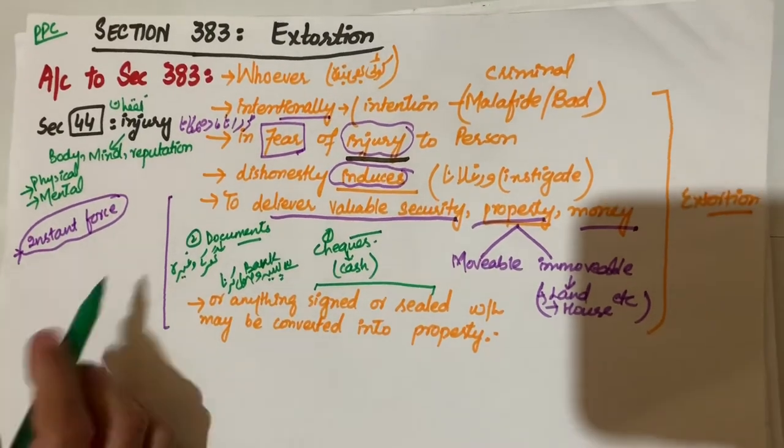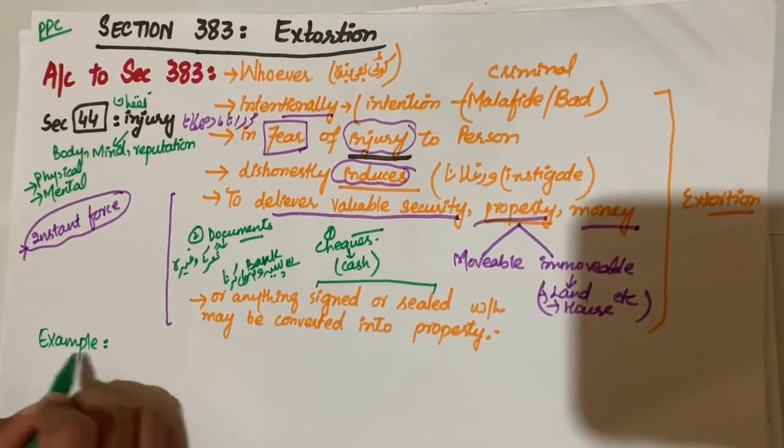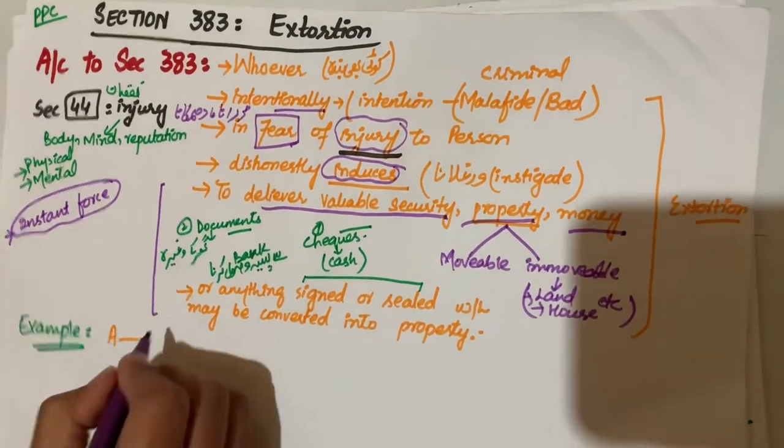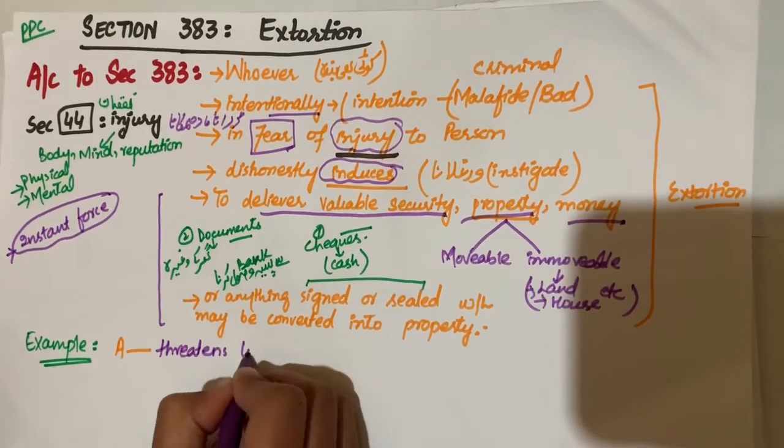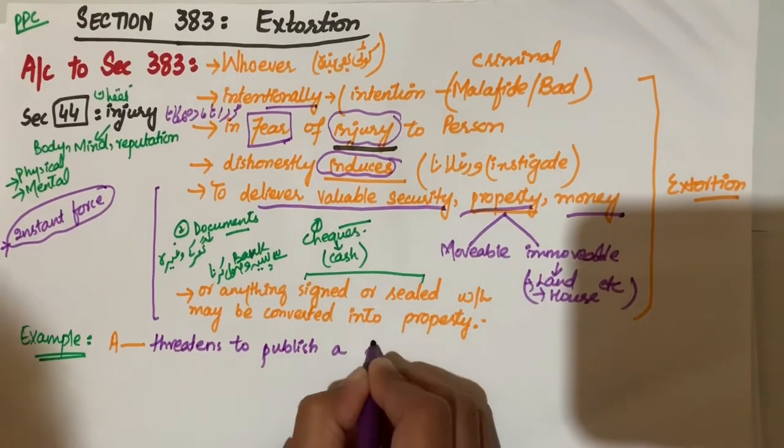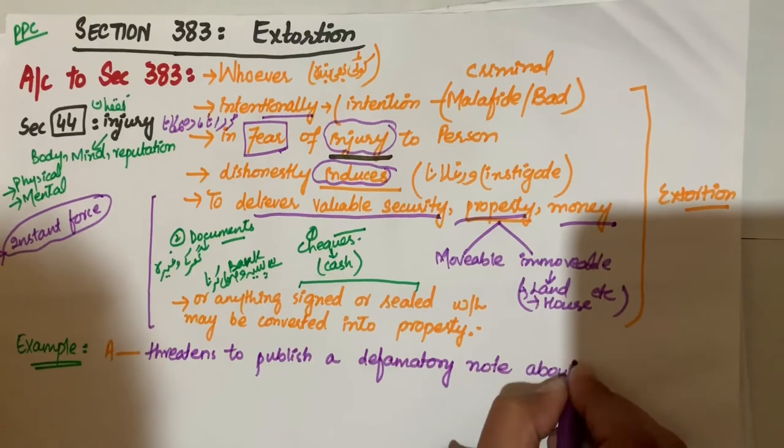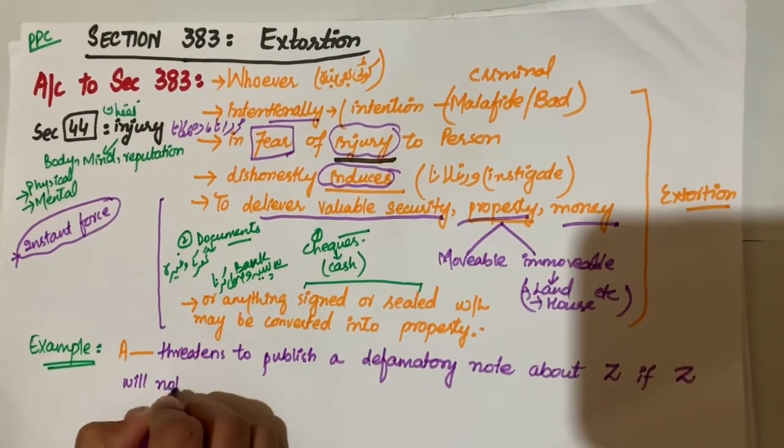Let's say for example, A threatens to publish a defamatory note about Z if Z will not deliver him money. He induces Z. Ab yahan kya hua ke A ne Z ko daraya, usko threat kiya.